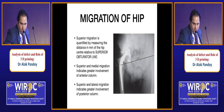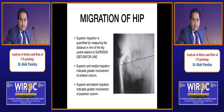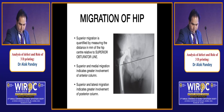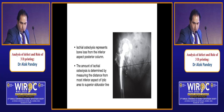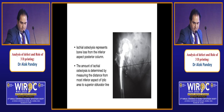What is migration of the hip? Superior migration is quantified by measuring the distance in mm of the hip center relative to the superior obturator line. Superior and medial migration indicates greater involvement of the anterior column, whereas superior and lateral migration indicates greater involvement of the posterior column. Ischial osteolysis represents bone loss from the inferior aspect of the posterior column, measured from the most inferior aspect of the lytic area to the superior obturator line.